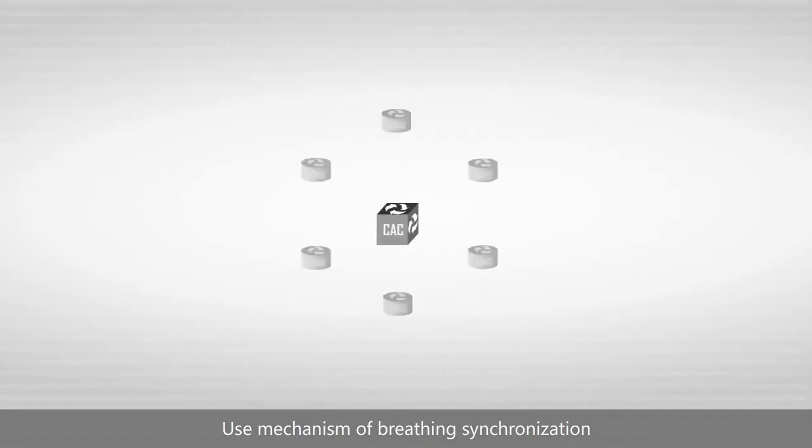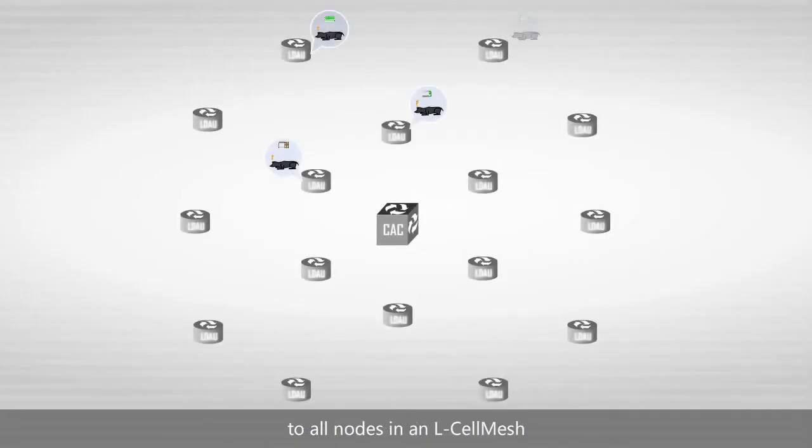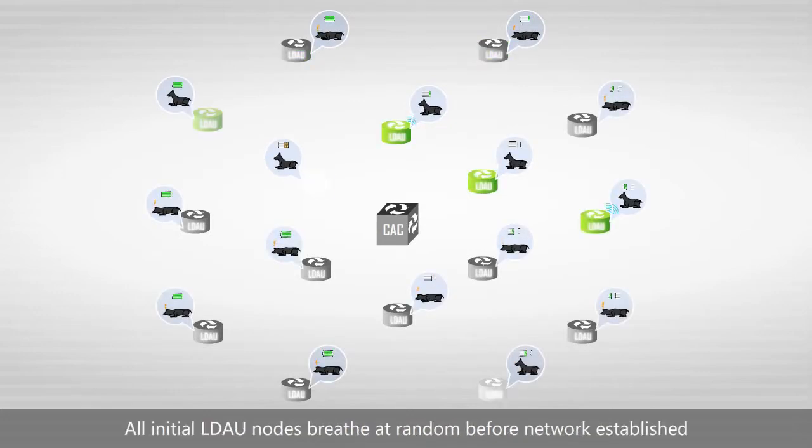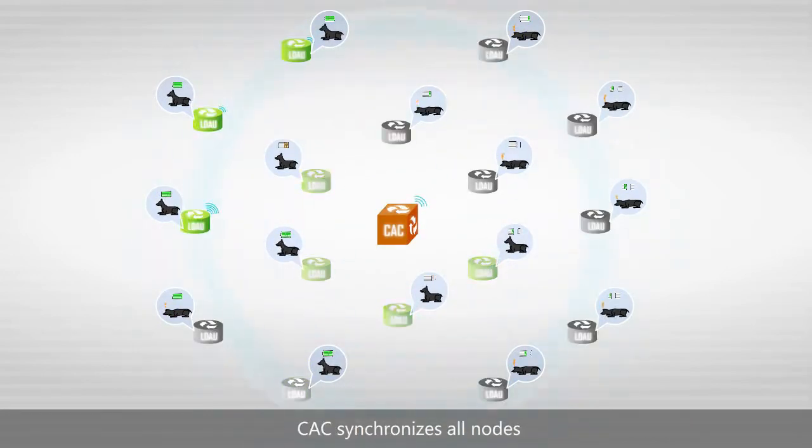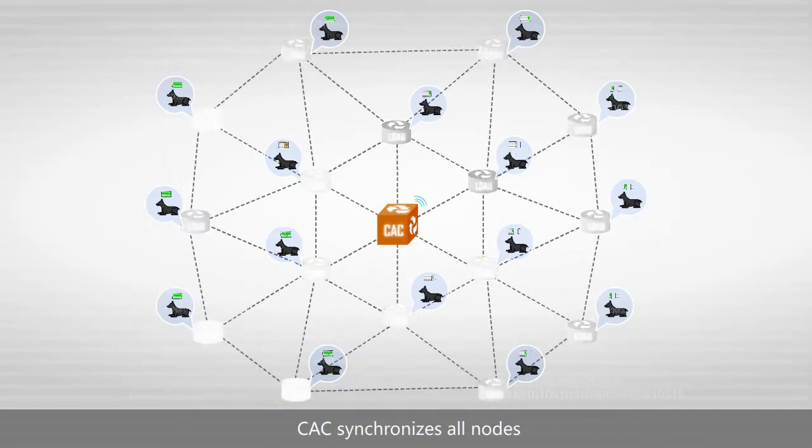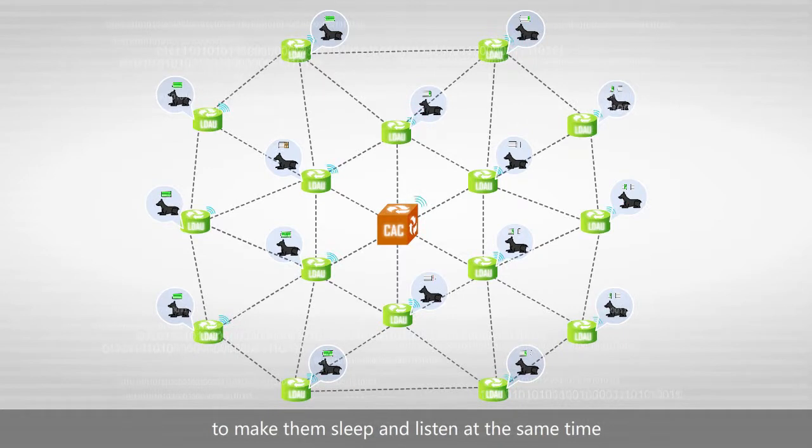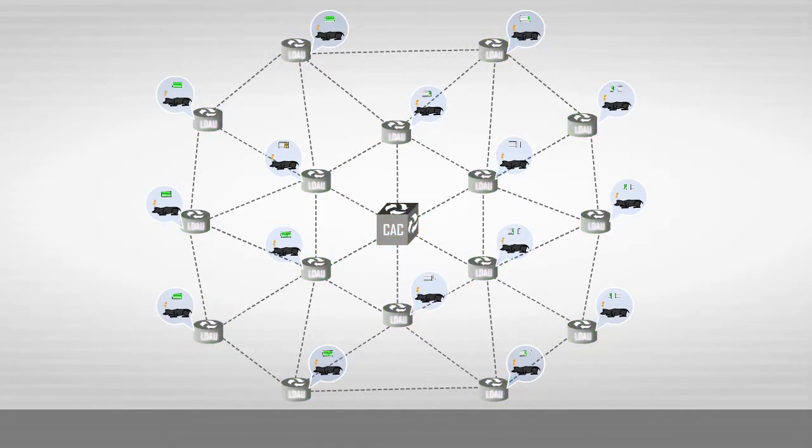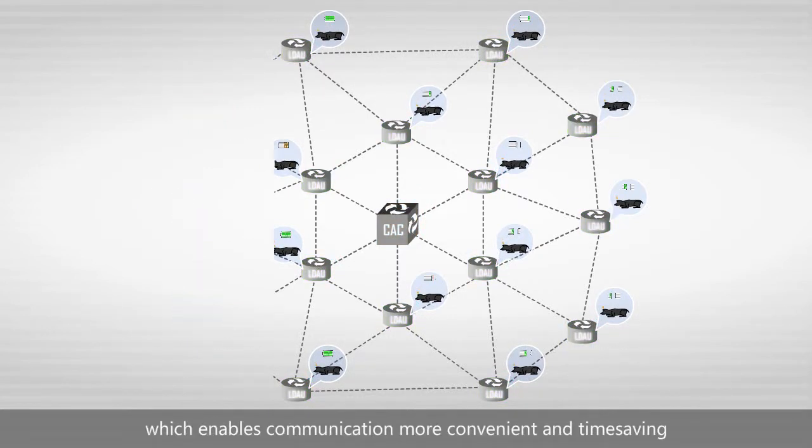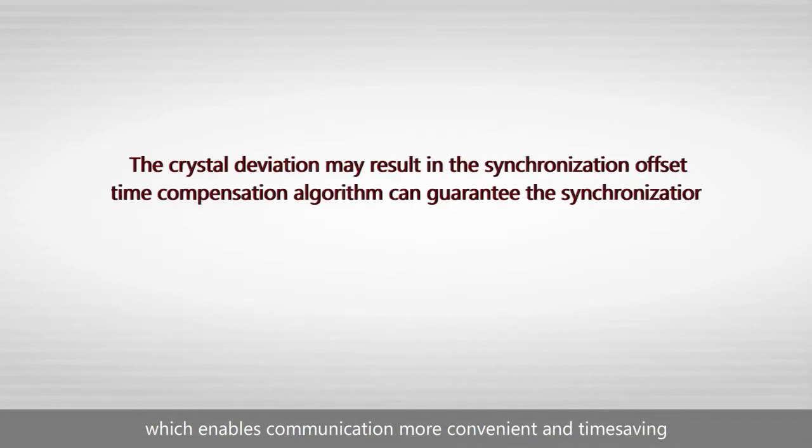Use mechanism of breathing synchronization to all nodes in an L-Cell Mesh. All initial LDAU nodes breathe at random before network established. CAC synchronizes all nodes to make them sleep and listen at the same time, which enables communication more convenient and time-saving.